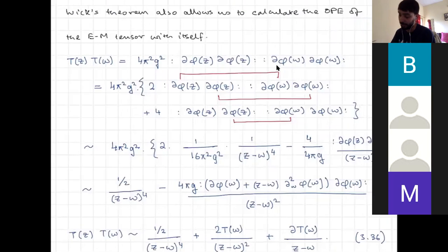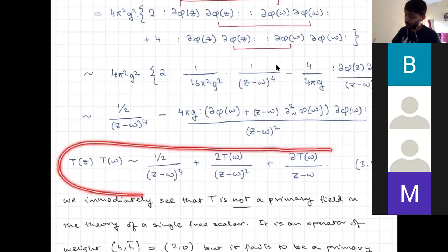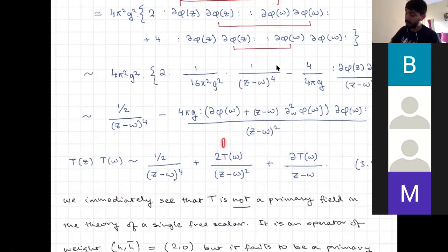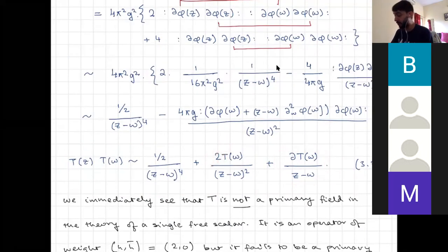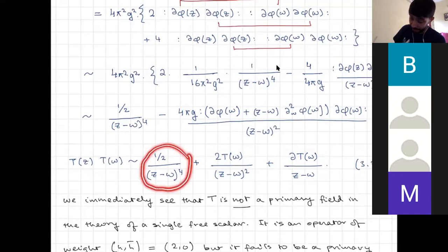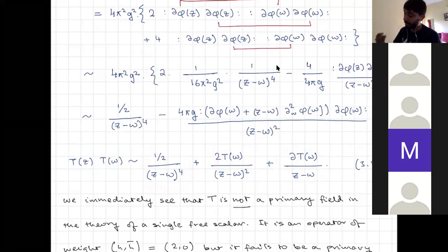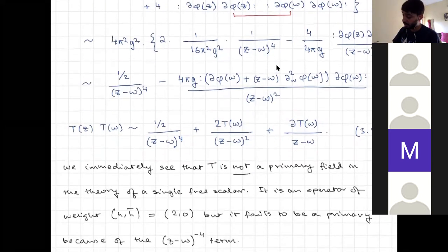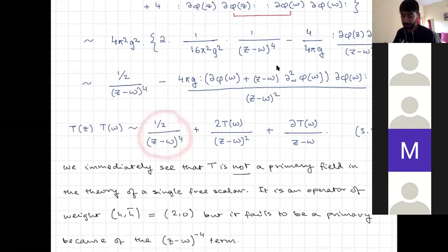We also computed T(z) T(ω), which gave the usual pieces reflecting that T is a field of weight two, plus an extra anomalous piece — a term proportional to 1/(z−ω)⁴. This extra term indicates that T is not a primary field. T has conformal weights (h, h̄) = (2, 0) but fails to be primary because of this additional term.